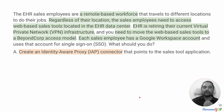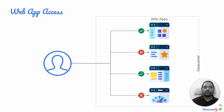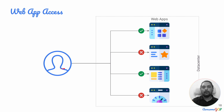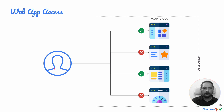With that overall understanding, let's look at each of the options. The first option says: create an Identity-Aware Proxy or IAP connector that points to the sales tool application. To illustrate the key requirement — there is a data center with a bunch of web applications inside. Salespeople outside the network, in the field or working from home, want to access the web-based sales application. We can generalize this: there might be multiple applications, and employees will require access to some while not having access to others, and we need a way to control that.